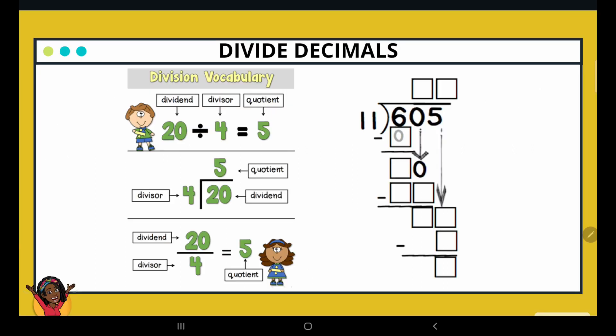Just so we're on the same page as it relates to the parts of our division problem, let's go ahead and take a look at this. So the number that goes inside the house is called our dividend. The number that we're dividing into the dividend is called the divisor, so that's outside the house. And then our answer is the quotient. When we think about it as a fraction, the dividend is our numerator, the divisor is our denominator, and again the answer is our quotient.